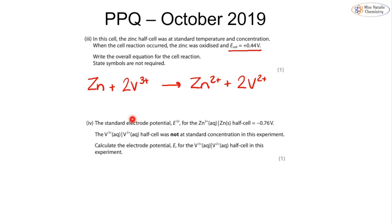The standard electrode potential for the zinc is -0.76 V. For the vanadium, the half cell was not at standard concentration. So we want to calculate that. E_cell = E_vanadium - E_zinc. So we substitute our numbers: +0.44 = E - (-0.76). When we rearrange that equation, you should get an answer of -0.32 V. In order to get the mark, you have to give the negative sign as well as the value.